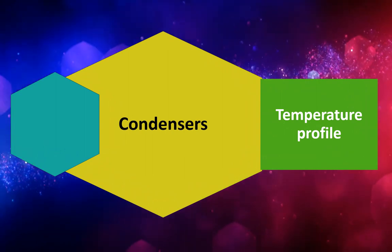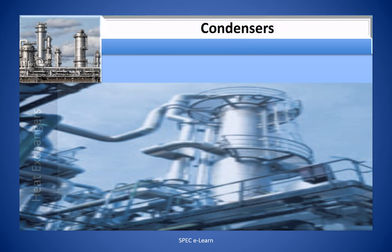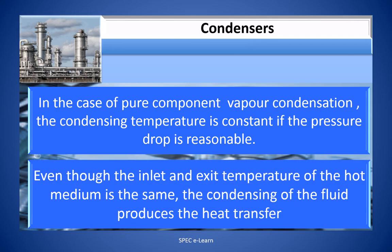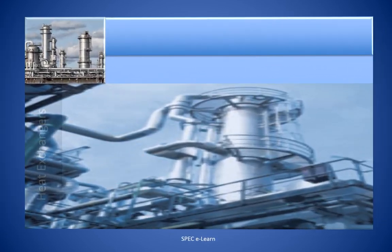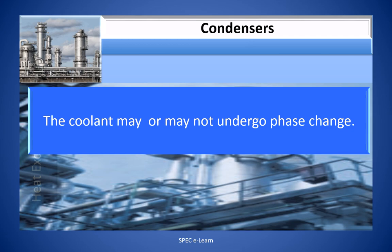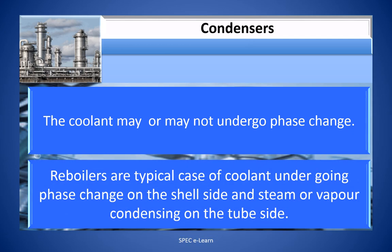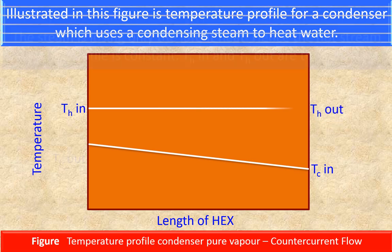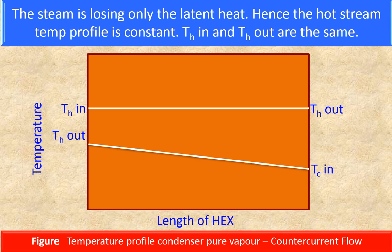In the case of pure component vapor condensers, the condensing temperature is constant if the pressure drop is reasonable. Even though the inlet and exit temperature of the hot medium are the same, condensing of the fluid produces the heat transfer. The coolant may or may not undergo phase change — reboilers are a typical case of the coolant undergoing phase change. For a condenser using condensing steam to heat water, the steam loses only latent heat, so the hot steam temperature profile is constant: T_H_in and T_H_out are the same.